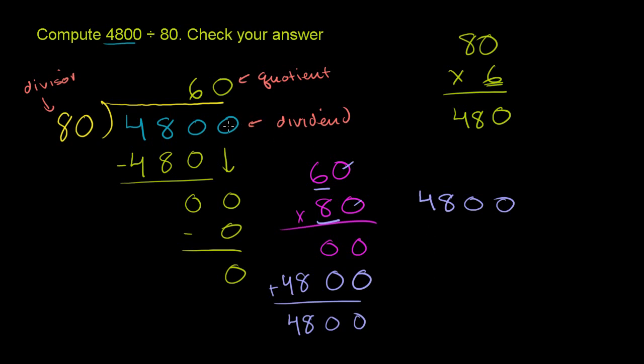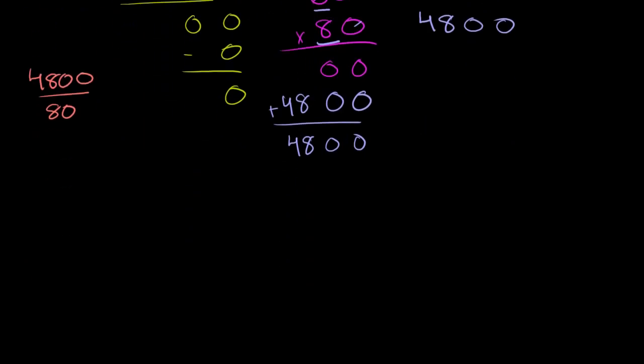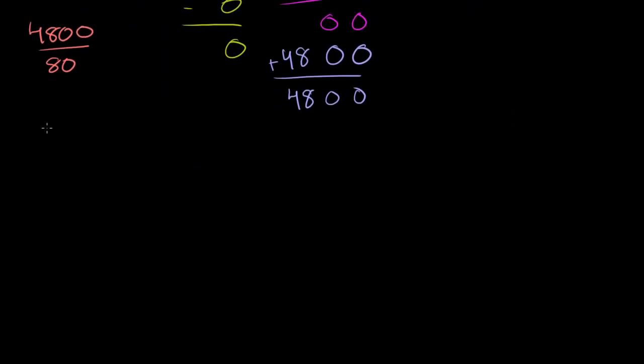Now, a quick way to have thought about 4,800 divided by 80 is to divide both of these numbers by 10 first. And just to think about it this way, what we're doing, this could be written as 4,800 over 80. Or this could be written as 4,800 over 80 could be written as 480 times 10 over 8 times 10. 4,800 is just 480 times 10, and 80 is just 8 times 10.